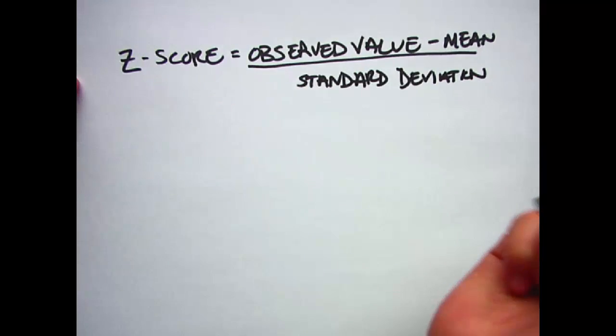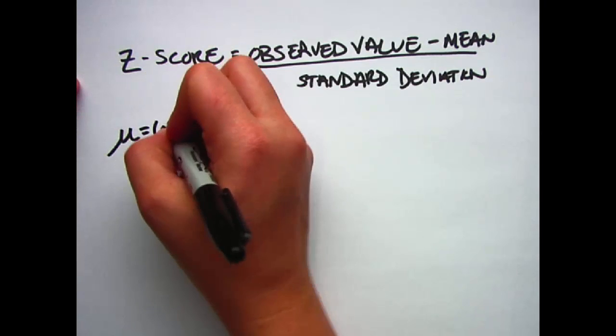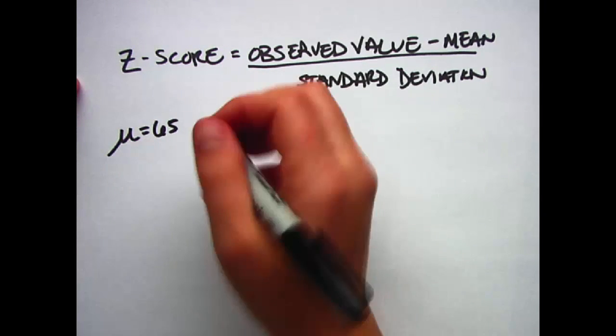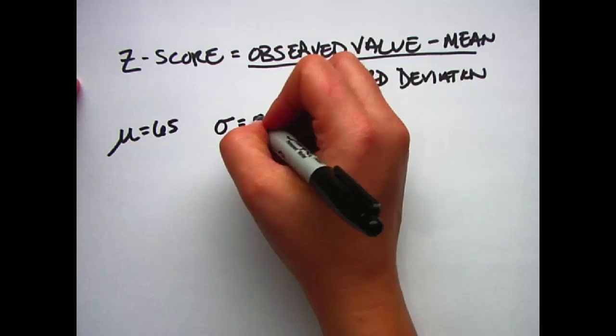In the problem that we've been looking at, we're looking at the average college female height, which is 65 inches, and they have a corresponding standard deviation of 2.7 inches.